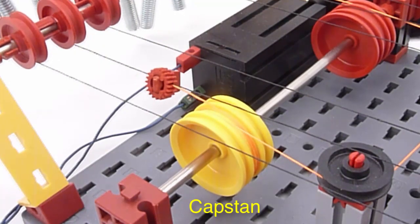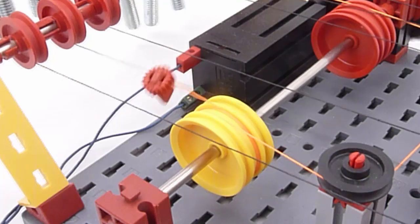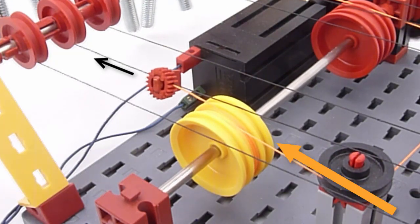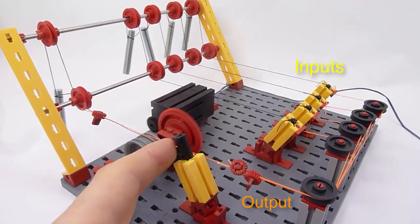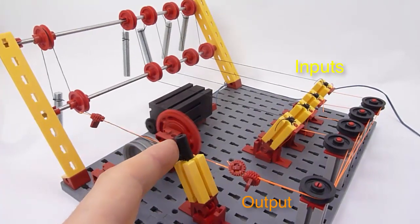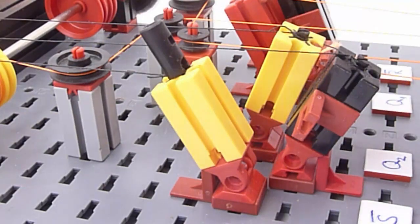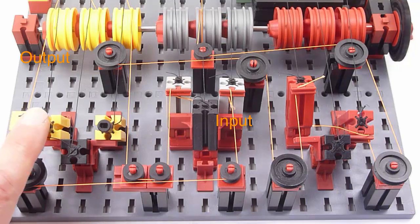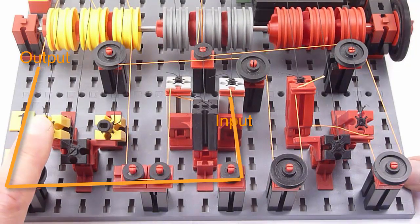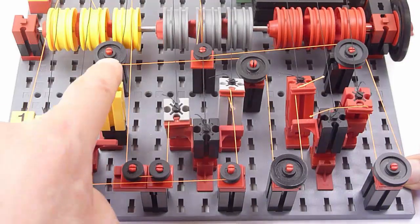The capstan plays the role of the transistor in electronic logic circuits. The capstan amplifies the output force. Any output is thus able to drive several inputs. The levers realize the logical function. Outputs and inputs are connected by strings. This allows as much flexibility as electrical wiring.